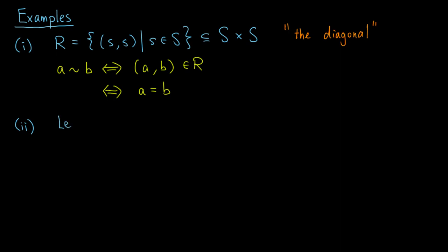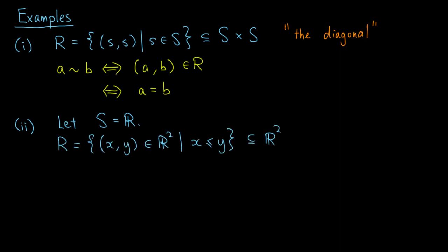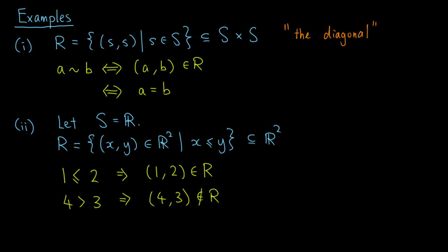As a second example, let S be the set of real numbers, and we define R to be the set of ordered pairs (x, y) in R squared such that x is less than or equal to y. This is by definition a subset of R squared. Now, since 1 is less than or equal to 2, we know that (1, 2) is an element of R — in other words, 1 is related to 2. On the other hand, 4 is greater than 3, so (4, 3) is not an element of R — in other words, 4 is not related to 3.